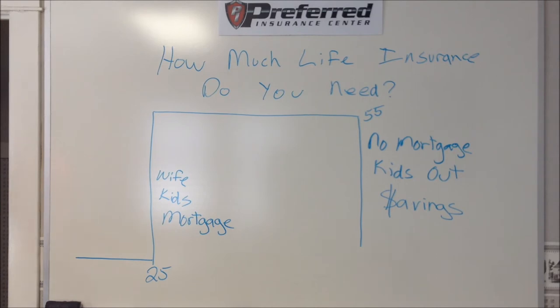It stays higher for about 30 years. So sometime between 55 and 60, usually their mortgage goes away, their kids move out, they've got some savings, and their life insurance needs go way back down. That's why you need the life insurance.